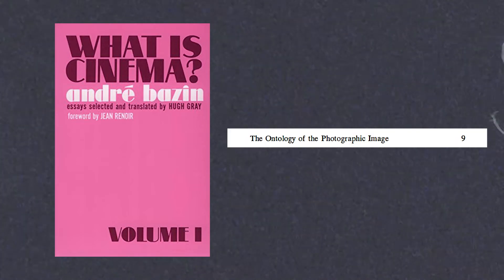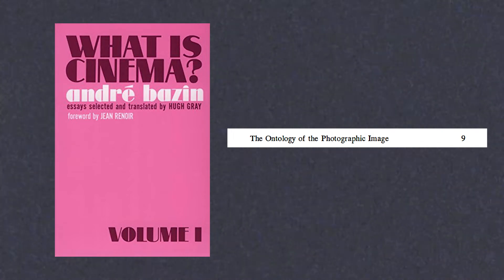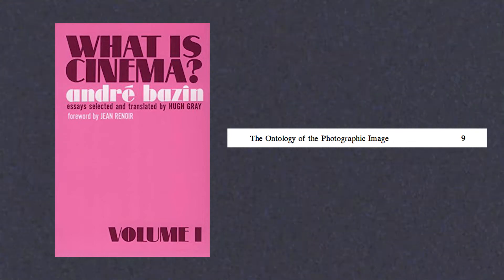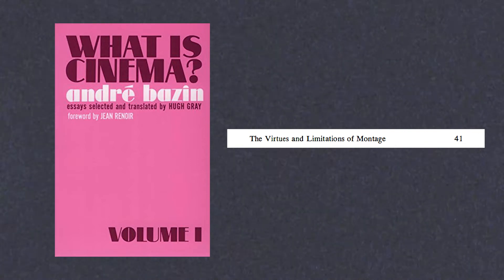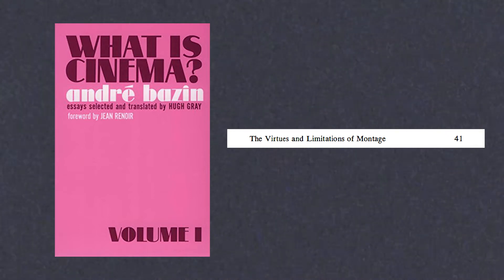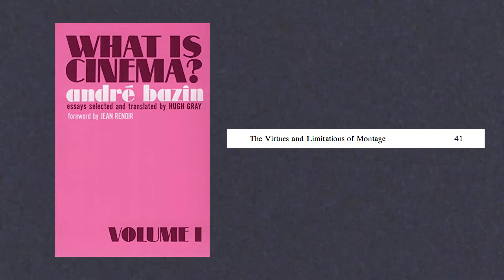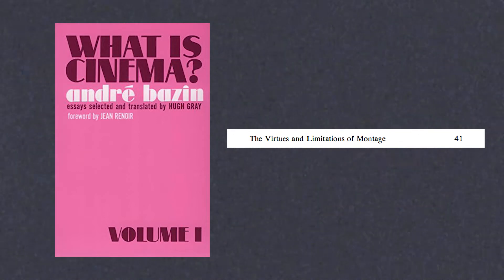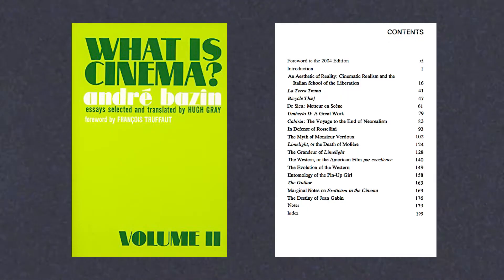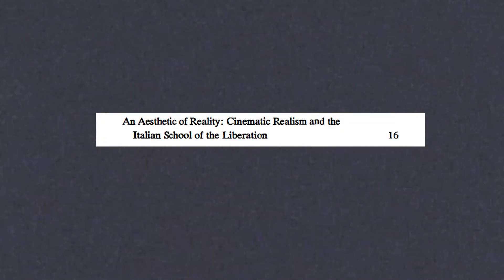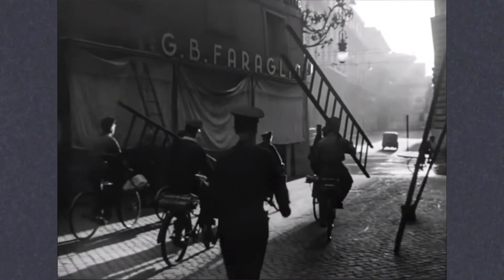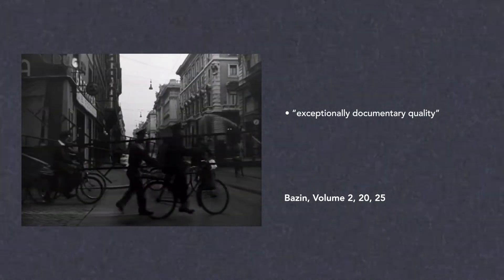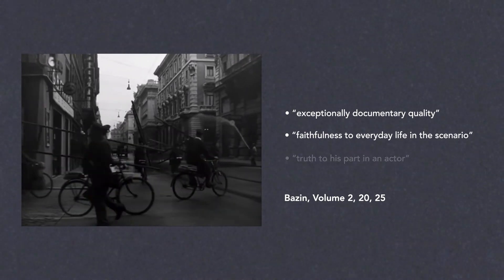The Ontology of the Photographic Image, contained within Volume 1, is perhaps Bazin's most famous piece of writing. His views on cinema expressed in this essay, particularly the emphasis he places on the automatism of the camera, informs many others in these two volumes. Another vital essay in Volume 1 is The Virtues and Limitations of Montage. It establishes the grievances Bazin has with the techniques of montage, and together with several other essays, would set in motion a certain and unnecessary polarisation between these techniques and realism, which Bazin championed instead. This fervour for realism is better displayed in Volume 2, wherein another significant essay is contained: An Aesthetic of Reality: Cinematic Realism and the Italian School of Liberation. In this essay, Bazin examines and exalts the aesthetics of Italian neorealist films, praising their exceptionally documentary quality, faithfulness to everyday life in the scenario, and truth to his part in an actor.